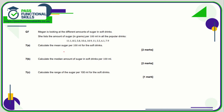Question number 7 — calculate the mean sugar. We add them up and divide by 9 because there are 9 values. The total is 77.4, and when you divide that by 9 you get 8.6. So the mean sugar is 8.6 grams per 100 millilitres.